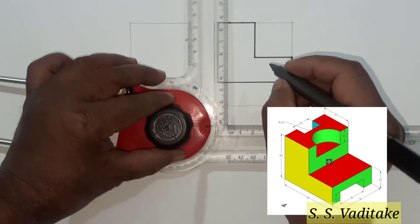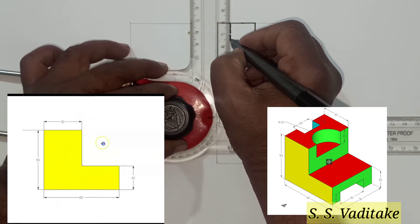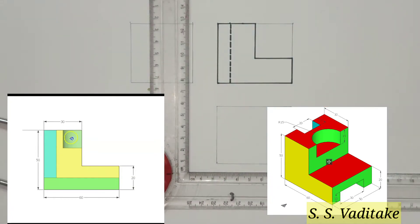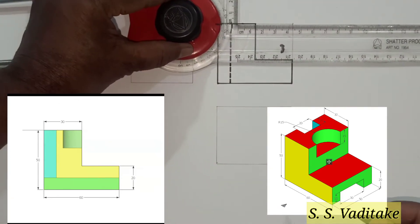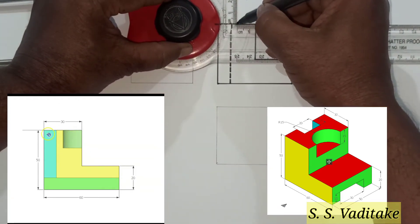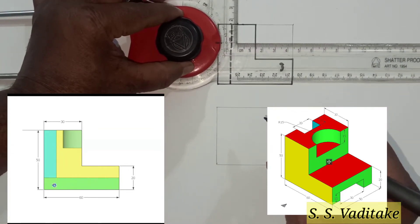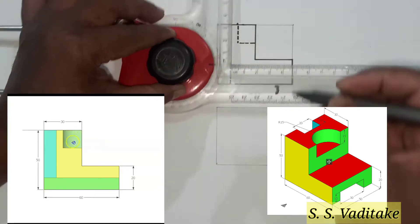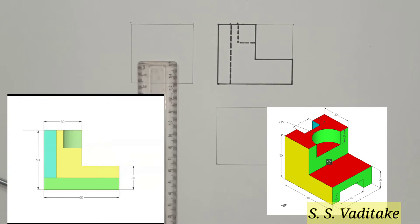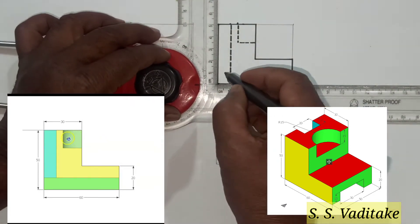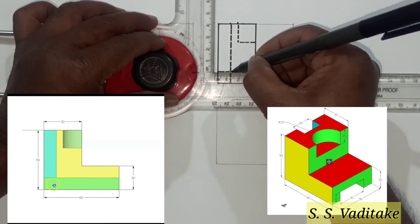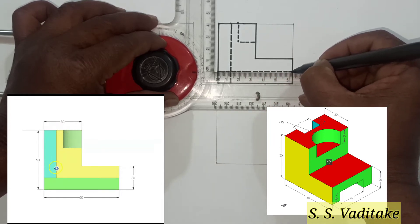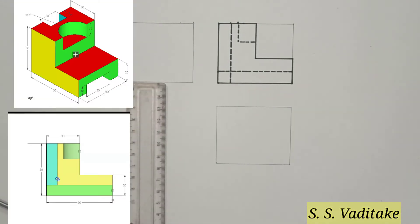Now we have to draw the hidden surface — that is the rectangular slot located at 10 millimeters from the left side — represented by a dotted line. The depth of this dotted line will be only 40 millimeters. Then we have to show the semi-circular drilled cut portion using dotted lines. Also show the rectangular slot cut at the bottom side using a dotted line, taking its respective dimension for its position from the bottom line, and draw its hidden portion in the front view.